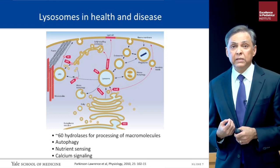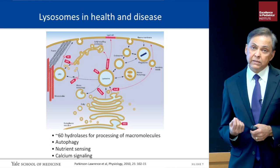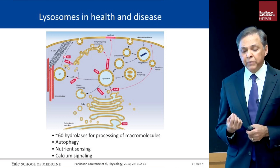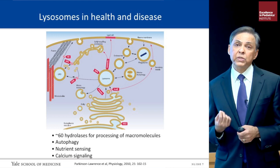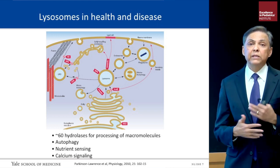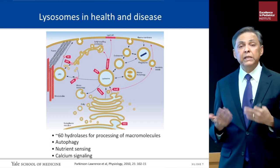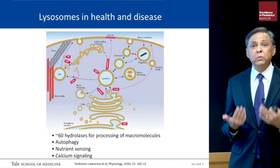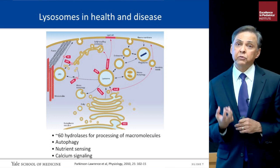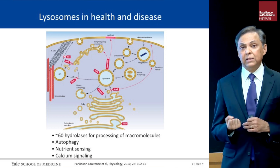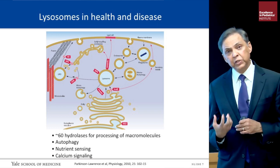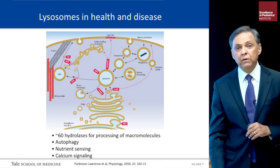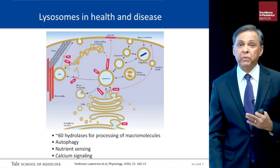The defect in Gaucher disease is a deficiency of a lysosomal enzyme. The lysosome is a very important cellular organelle involved not only in degradation of materials that need to be recycled, but also in autophagy, nutrient sensing, and calcium signaling — the central hub of controlling cellular homeostasis. A deficiency of a lysosomal enzyme causes not only accumulation of material, but broad dysfunction of the lysosome leading to widespread pathophysiology.